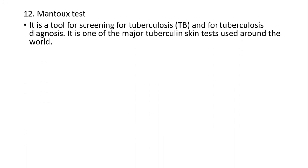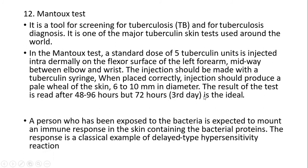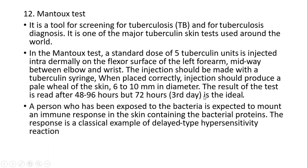Mantoux test: this is used for screening and diagnosis of tuberculosis, and is one of the major tuberculosis skin tests used around the world. The Mantoux test involves a standard 5 tuberculin units injected intradermally on the flexor surface of the left forearm, midway between the elbow and wrist. The injection should produce a pale wheal of skin 6–10 mm in diameter. The result of the test is read after 48–96 hours, though 72 hours is ideal. A person who has been exposed to the bacteria is expected to mount an immune response in the skin containing tuberculin proteins — a classical example of delayed-type hypersensitivity reaction.